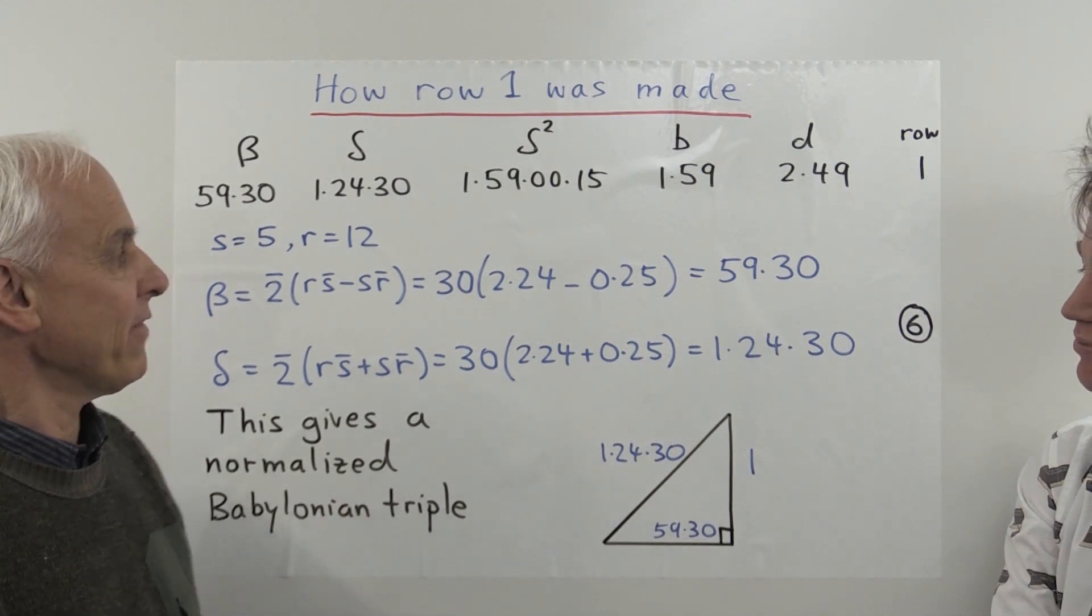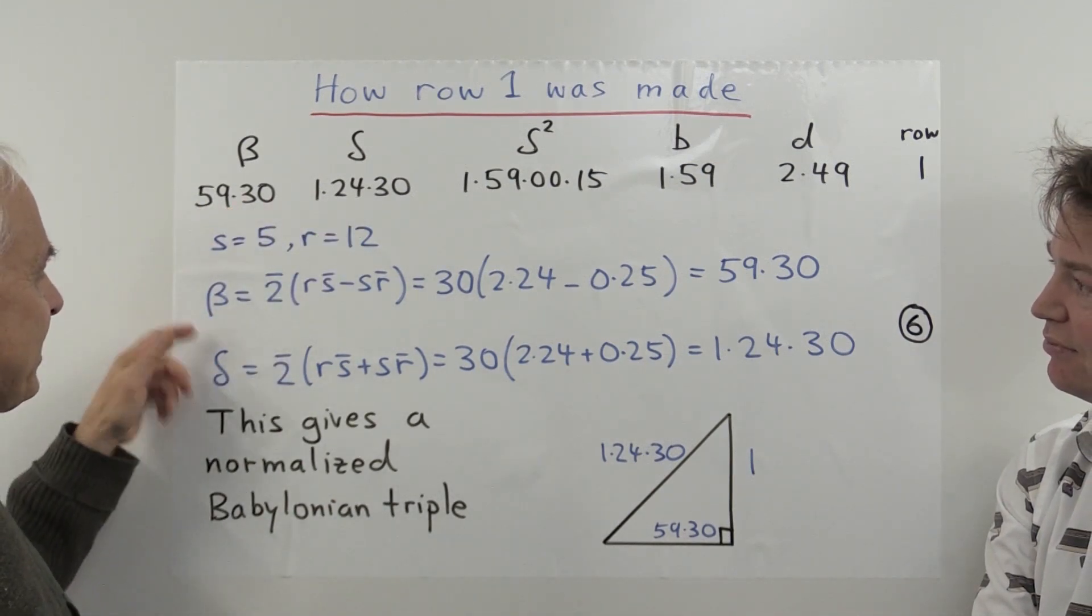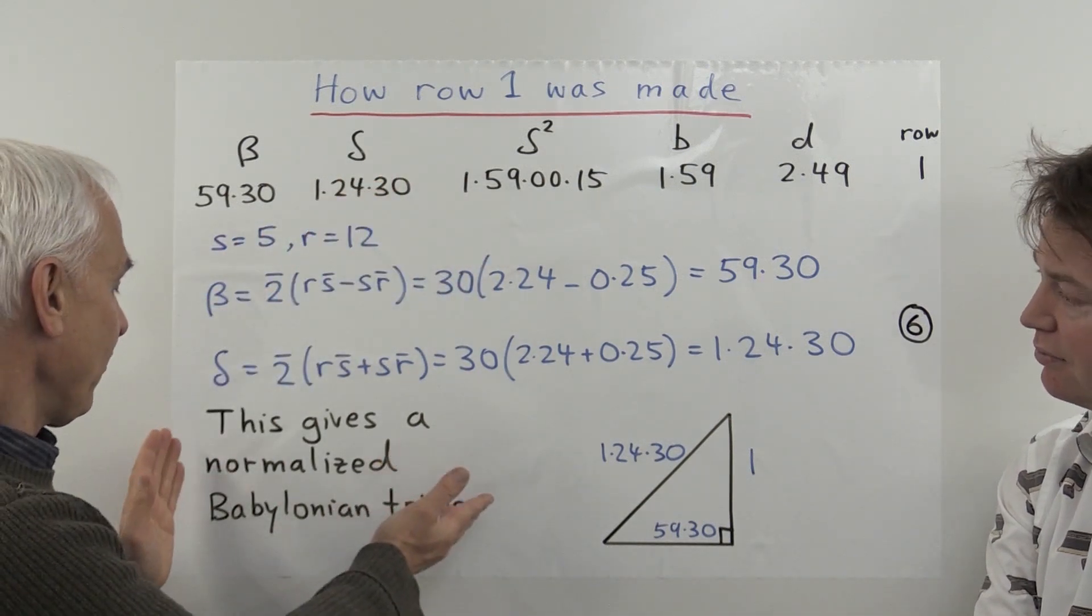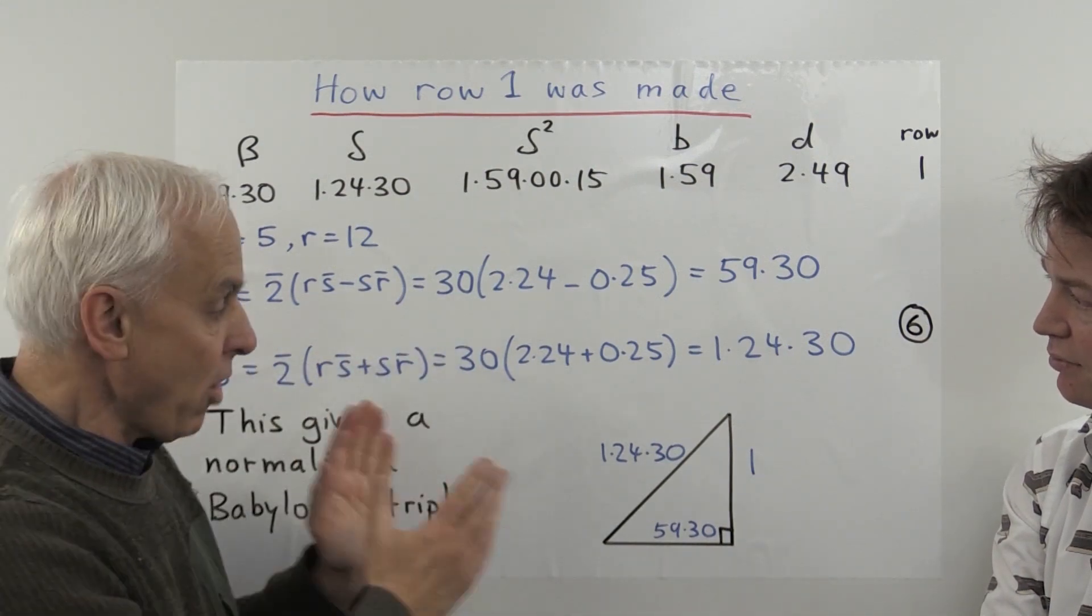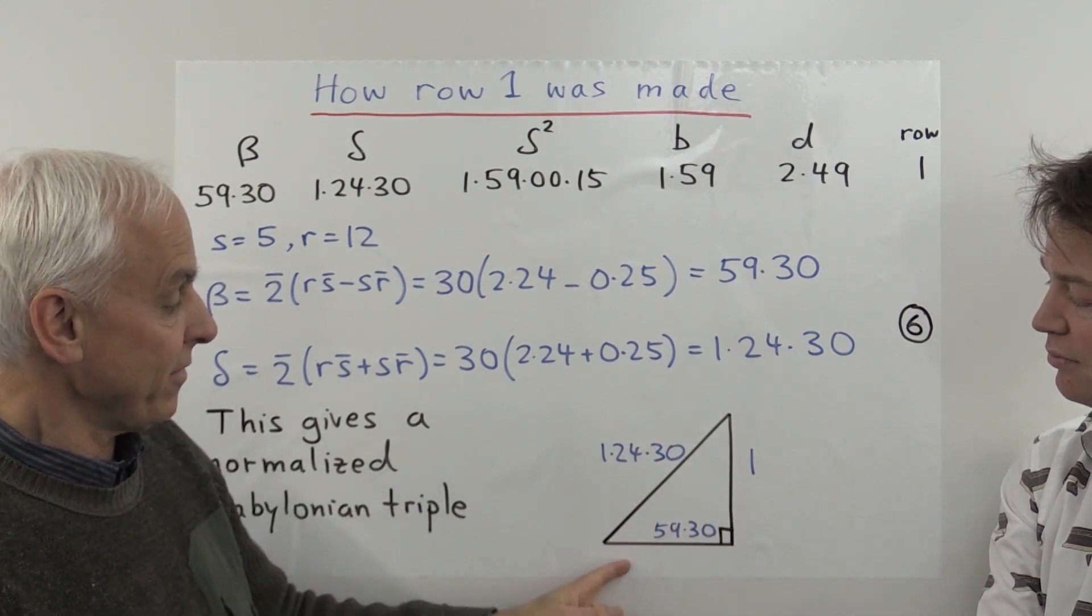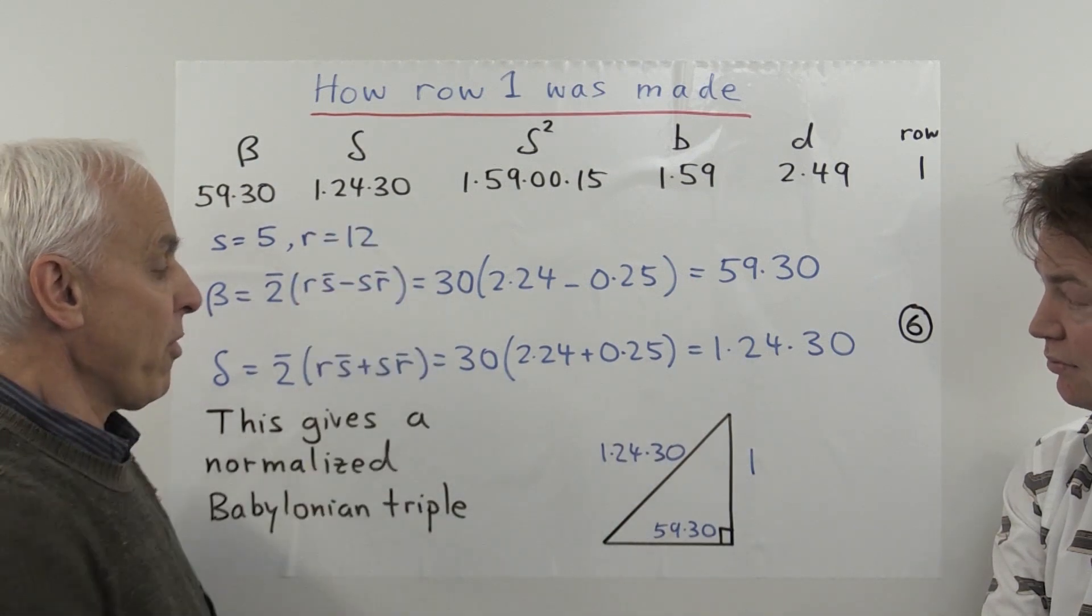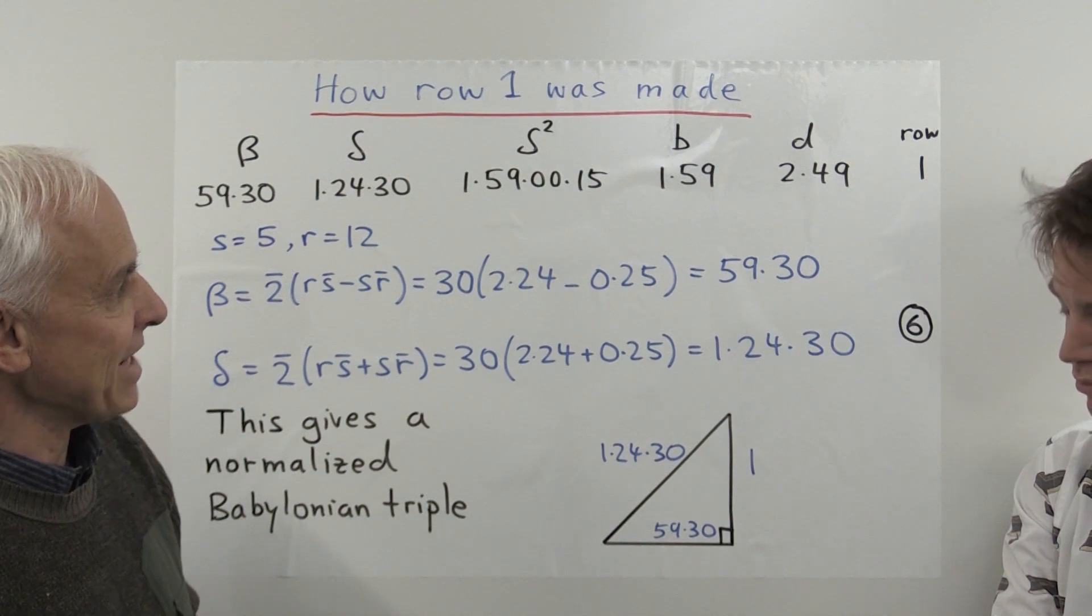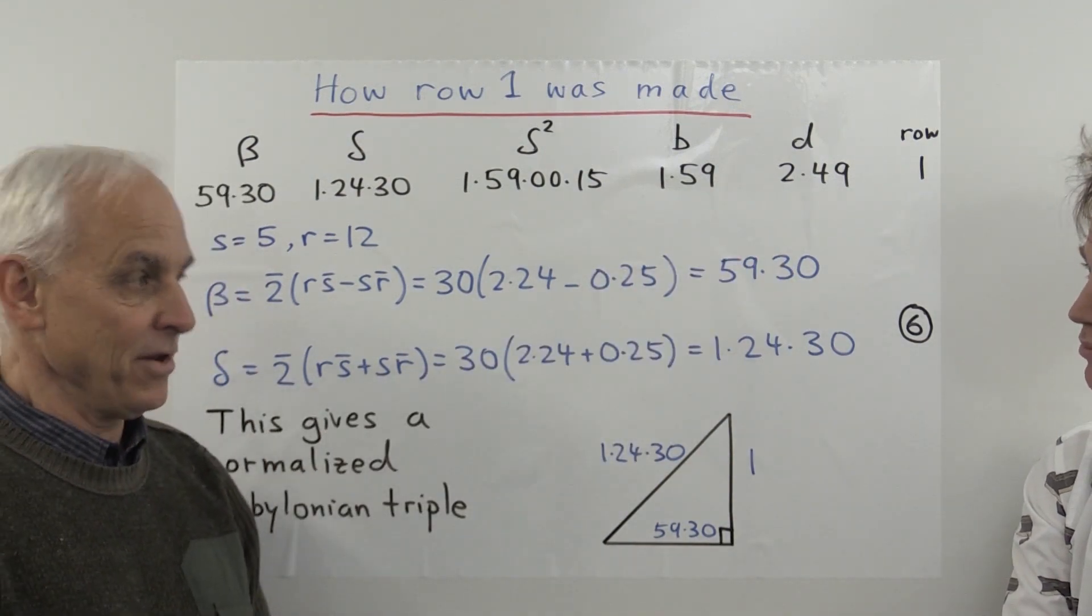And the second reason is that some of these squared values in Plimpton 322 are actually too big for them to be able to take a square root of. We know that the Babylonians were really good at taking square roots and we have some excellent examples of them taking square roots of big numbers, but these are always contrived examples where the numbers have a nice regular approximation and they can perform their method appropriately. The numbers in Plimpton 322 are not like that. They're enormous and they're not susceptible to the Babylonian method of taking the square root. So there's two really good reasons why we believe that beta and delta are actually computed explicitly and not via the square root algorithm. And so that's what probably would have happened first. The scribe would have created these two numbers beta and delta using exactly this prescription, and the delta squared is just obtained as the square of that, and that gives a normalized Babylonian triple.